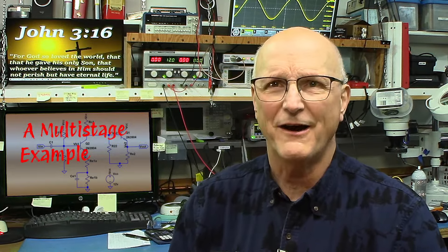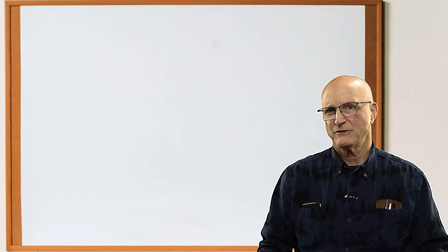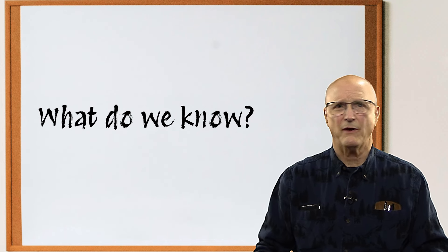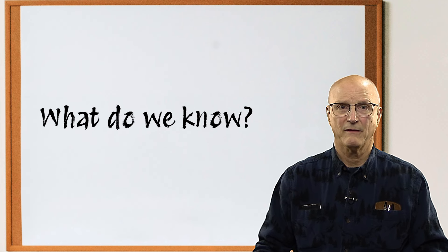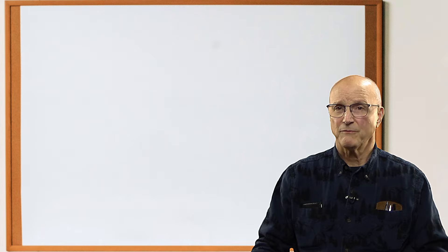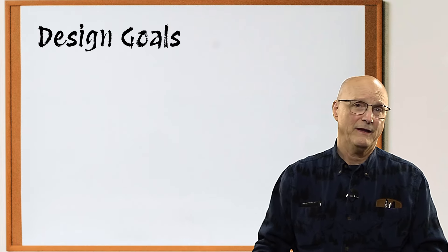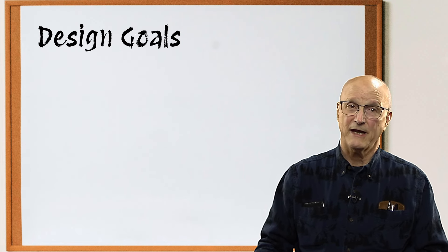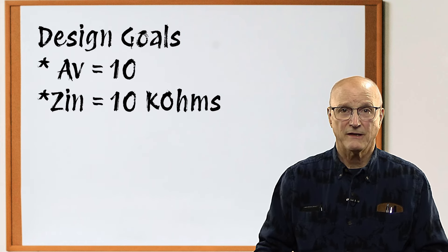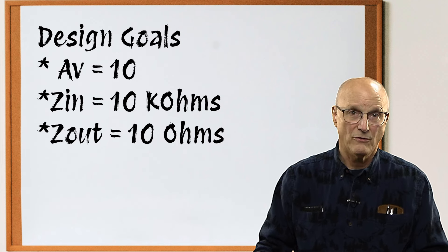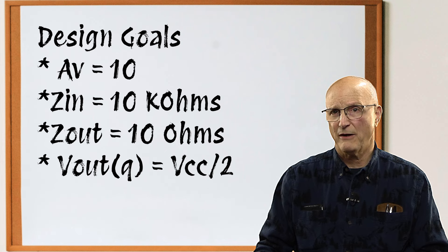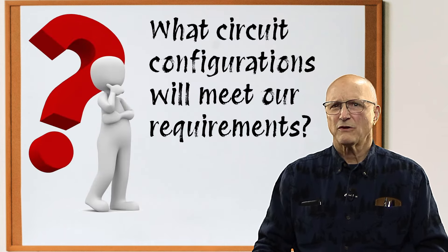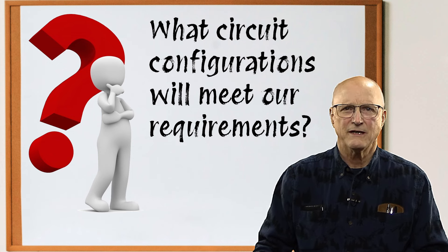We begin by defining our objectives. One of the most important questions we ask in circuit analysis and design is: what do we know? Our first bit of information gathering is answering the question, what are we looking to accomplish? In our fictional world, I have been tasked to create an amplifier using discrete bipolar junction transistors which has a voltage gain of 10, an input impedance of 10k ohms, an output impedance of 10 ohms, a quiescent output voltage of half the power supply voltage, and it must run off of a 12 volt power supply. My first step is to establish what sort of circuit configurations will provide me with the characteristics I need to meet my requirements.